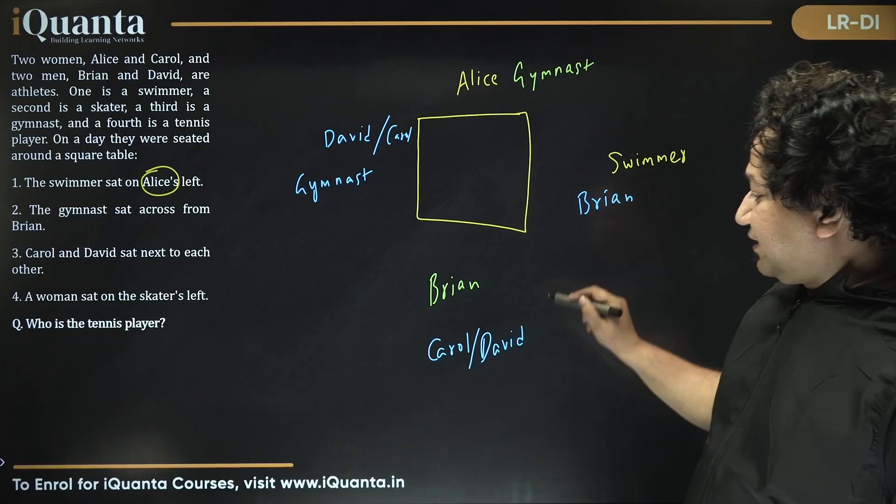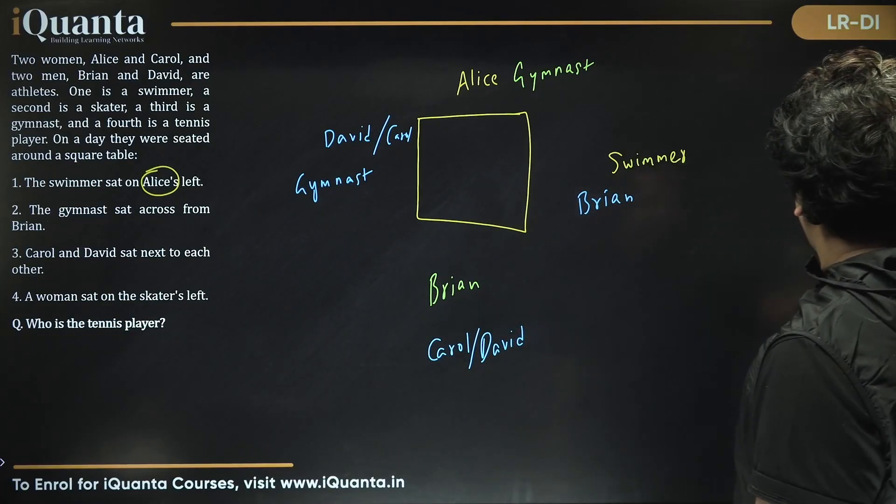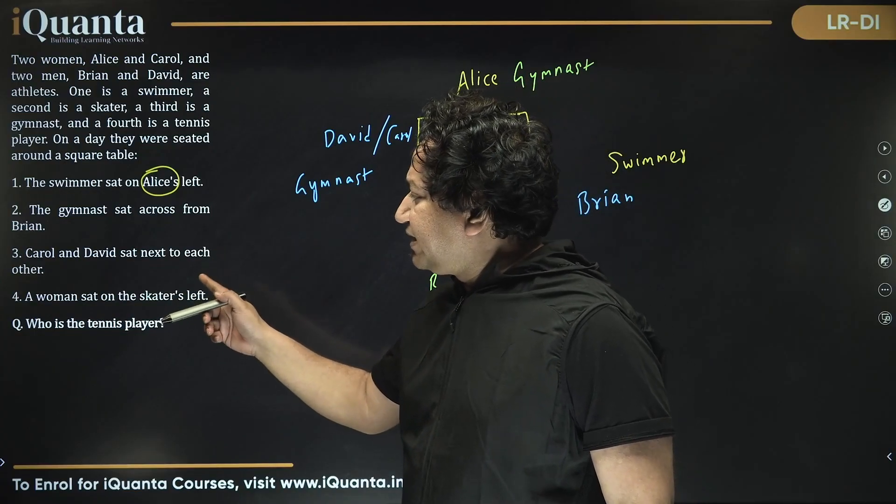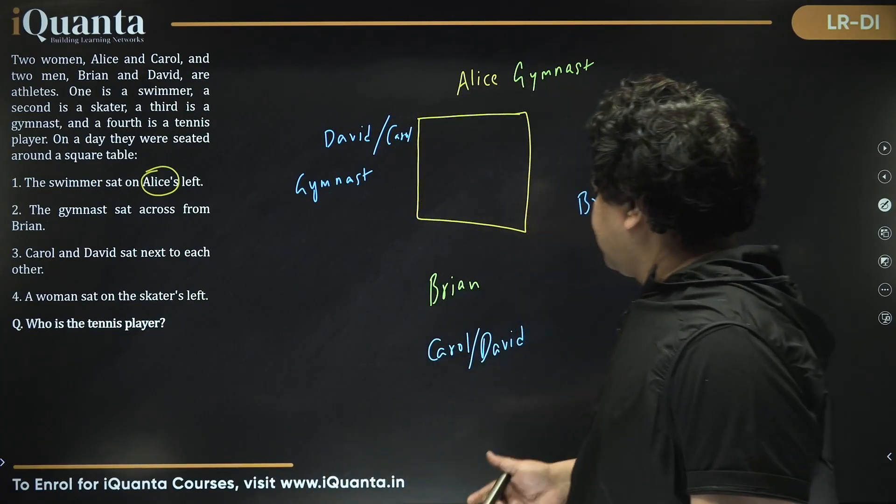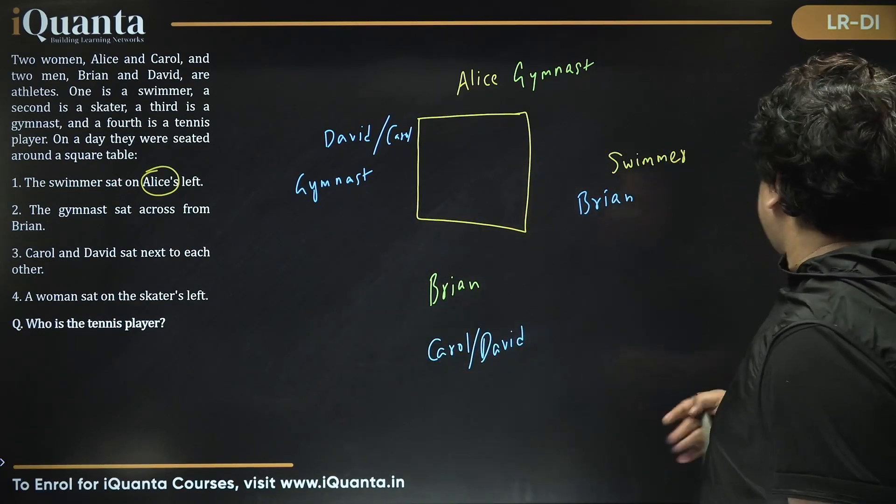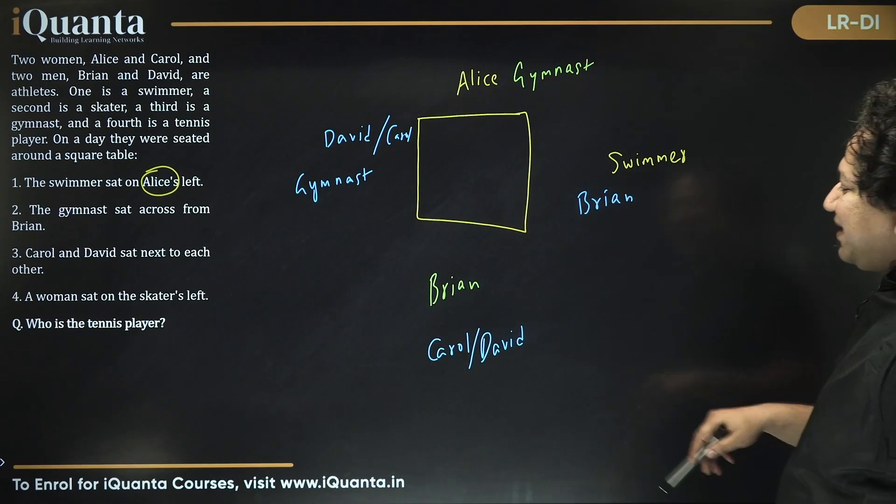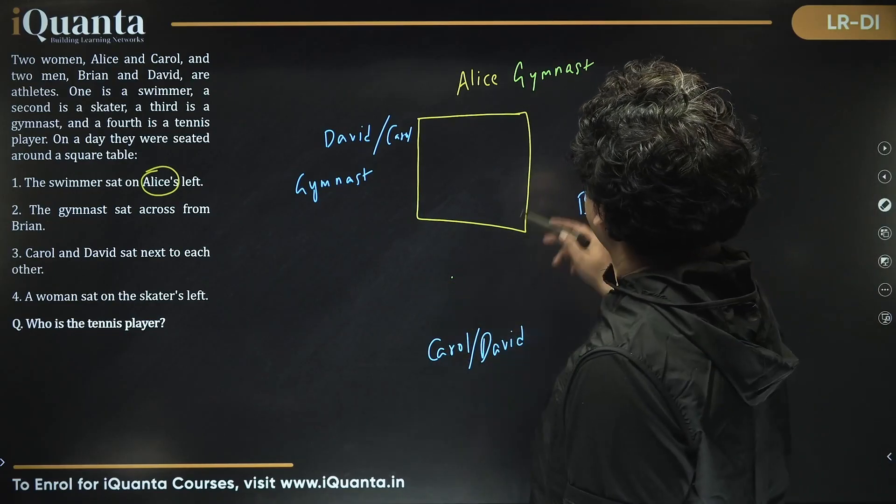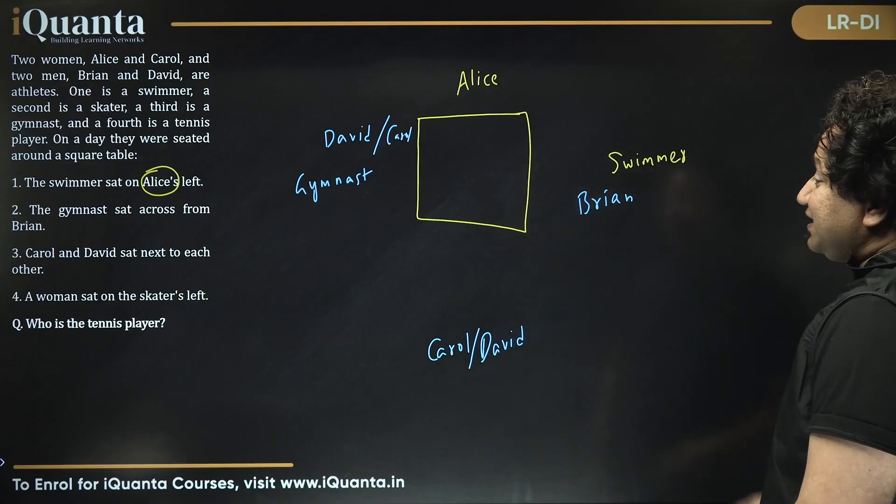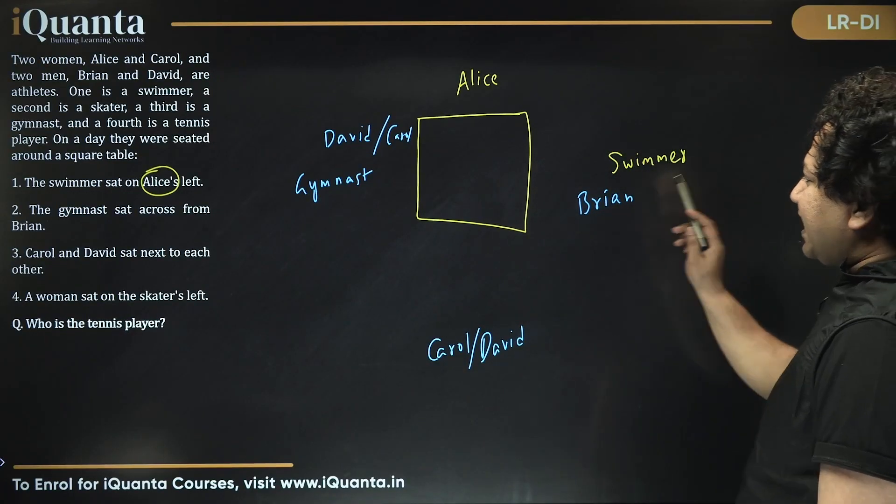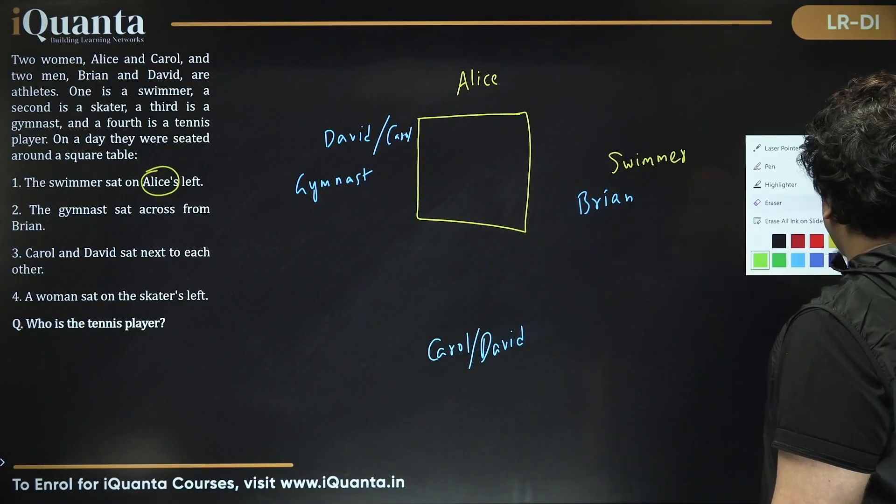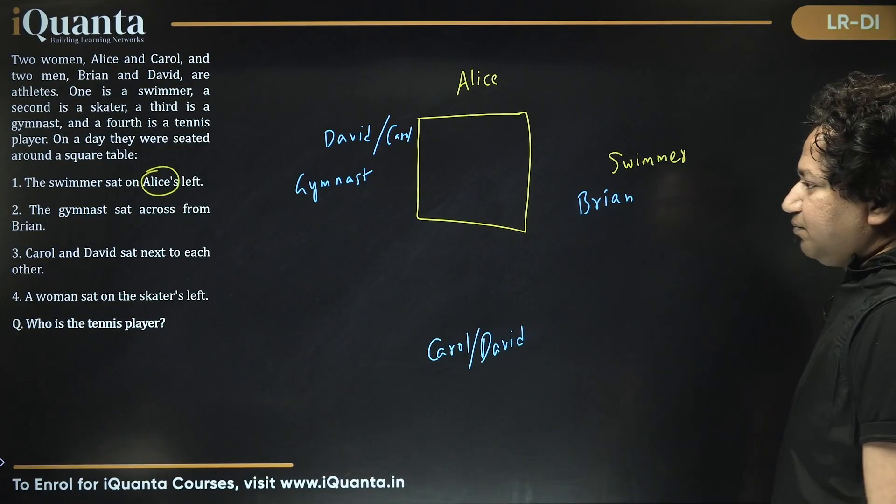If Brian is there, so I took the blue ink. If Brian is sitting over here, the green ink, and Carol and David must be sitting next to each other. Brian is here, Alice is there, Carol would be across, not next. That means the green case is wrong. That is what happens in logical reasoning. Green case is definitely wrong. If green is wrong, that means blue is right. So Brian is here, Gymnast is here. Gymnast must be David or Carol. We don't know. Let's go ahead.